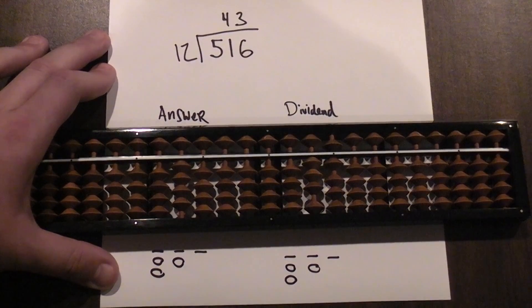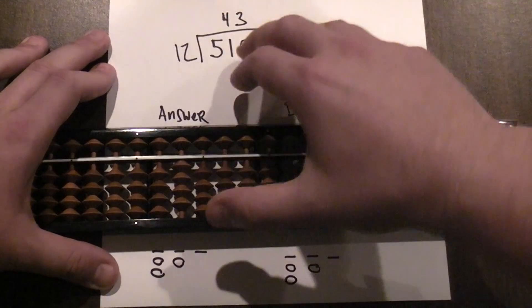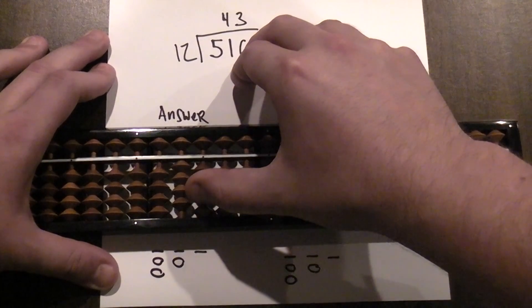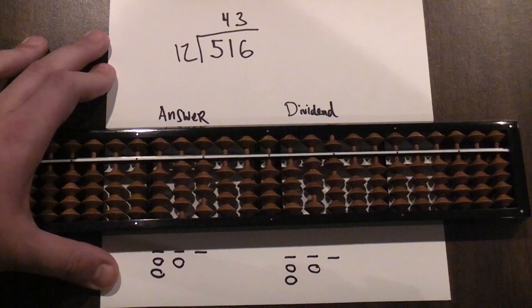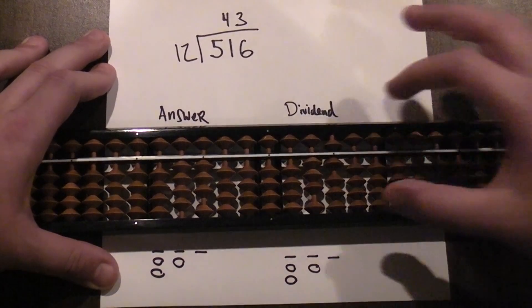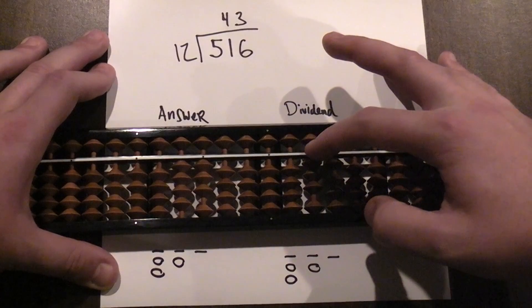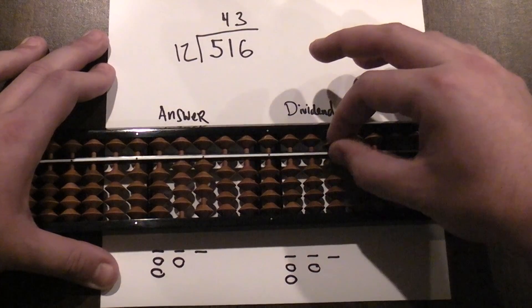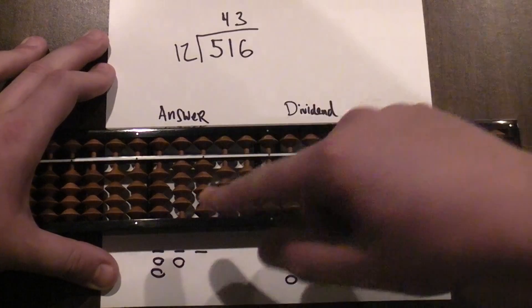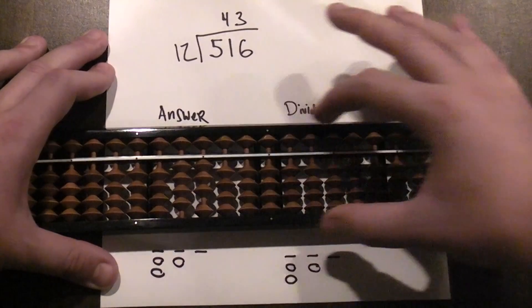12 times 3, so I enter 3 here in my answer column. 12 times 3 is 36, so now I subtract 36 from my dividend. So I subtract 3 here and I subtract 6 here, and I have my answer: 43, and I don't have a remainder.